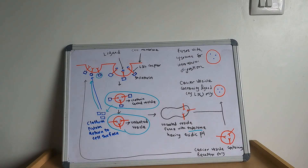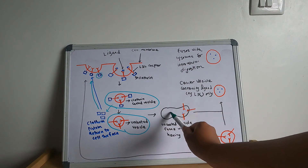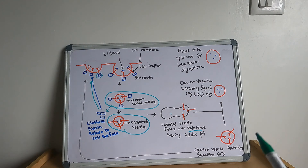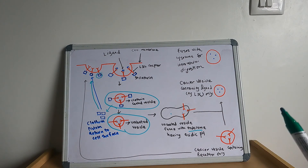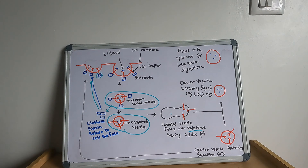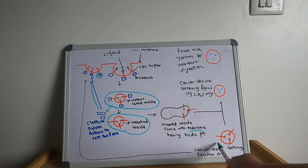The uncoated vesicle then fuses with the endosome. Endosomes are a system of vesicles present in the cytoplasm that contain H⁺ ATPase pumps (hydrogen pumps) that acidify the interior. The acidic pH of the endosome causes dissociation of receptor from ligand, resulting in sorting of the ligand and receptor within the endosome.